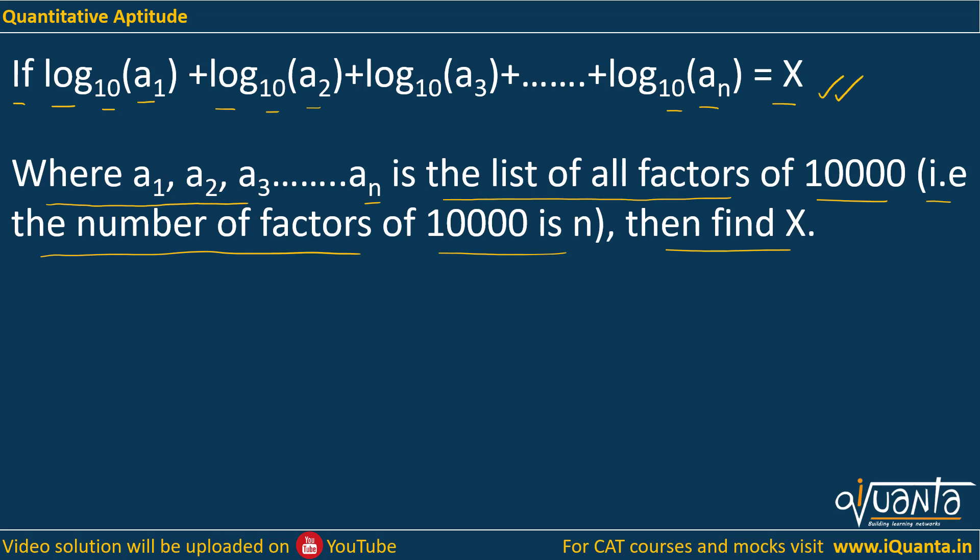First, we need to use a property of logarithms. When logarithms with the same base are being added, we can take the base common and multiply everything inside. What does that mean? If we have logₐ(x) + logₐ(y) + logₐ(z), we can take the base common and multiply the terms inside: logₐ(x·y·z).